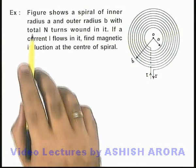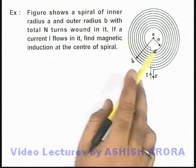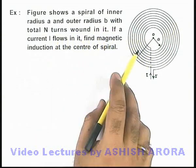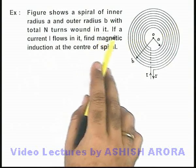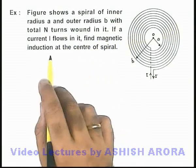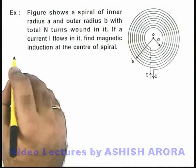In this example, the figure shows a spiral of inner radius a and outer radius b with total N turns wound in it. We are given that if a current i flows in it, we are required to find the magnetic induction at the center of the spiral, that is at point o.